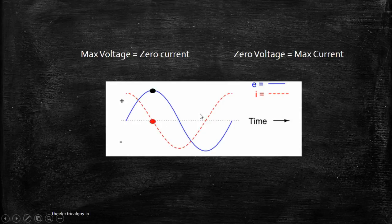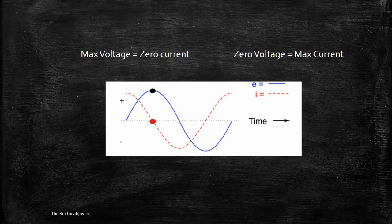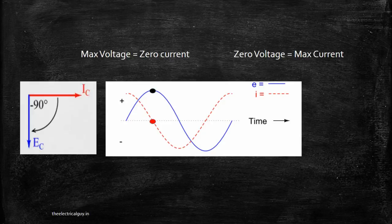If you draw a neat waveform for this situation, you will find that when voltage is zero, current is maximum, and when voltage is maximum, current is zero. This is the reason you always get a leading current in a capacitive circuit. If you draw a vector diagram for voltage and current through a capacitor, you will see that the current is leading the voltage by 90 degrees.